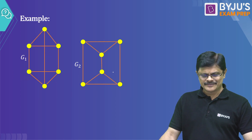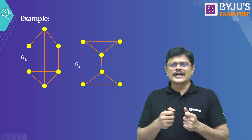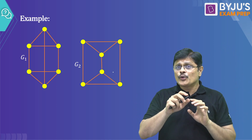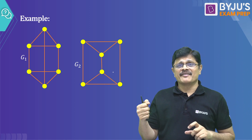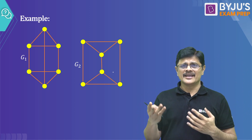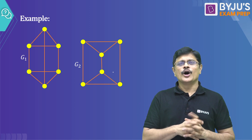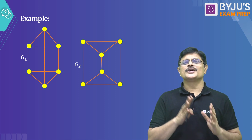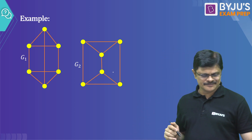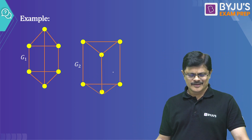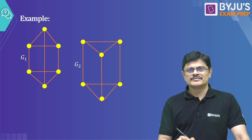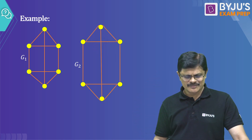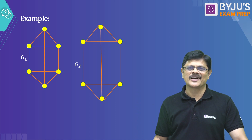Let us take one more example. Are these two graphs isomorphic or not? Try to do operations like stretch — take a particular vertex and try to stretch it out — but you are not supposed to cut any edge. You can redraw one graph so that you can get the other graph, or try simple rotations, stretching, shrinking, or flip operations to get the other graph. So I just pull this particular vertex down, then try to pull another vertex up. The connected edges also come along, and you can see that the two graphs are the same graphs drawn differently.